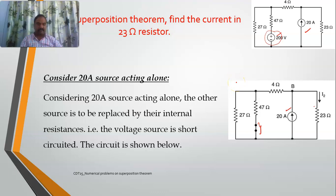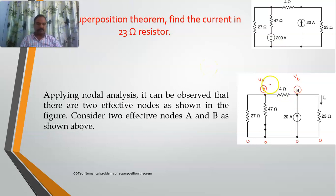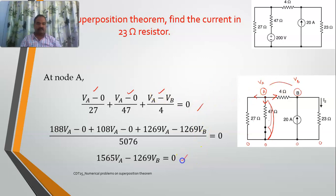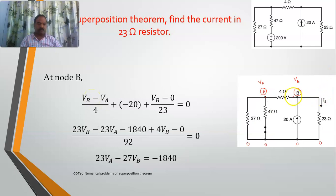Again I will apply nodal analysis. I set the reference as 0 volts, take node A with voltage va and node B with voltage vb. At node A, there are three paths: va minus 0 divided by 27, plus va minus 0 divided by 47 (since the 200 volt source is now zero), plus va minus vb divided by 4. Simplifying gives the node A equation.